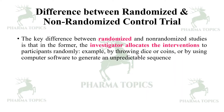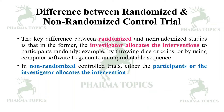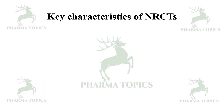The key difference between randomized and non-randomized studies is that in the former, the investigator allocates the interventions to participants randomly — for example, by throwing dice or coins, or by using computer software to generate an unpredictable sequence. In non-randomized control trials, either the participants or the investigator allocates the intervention.